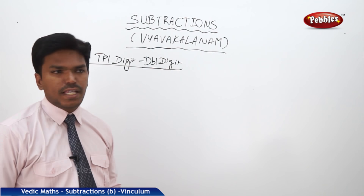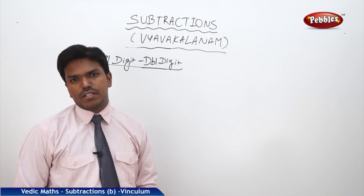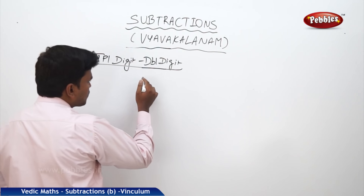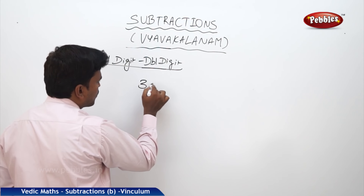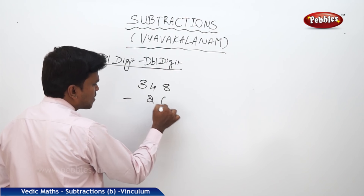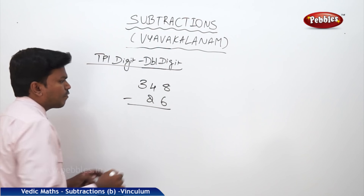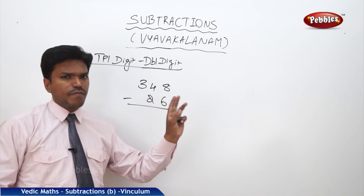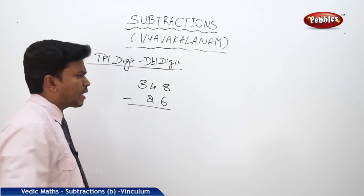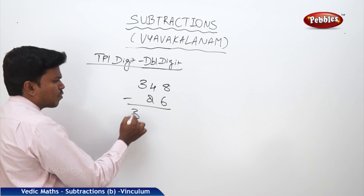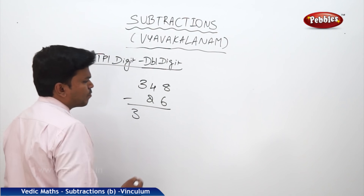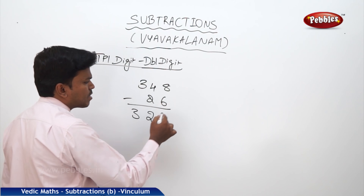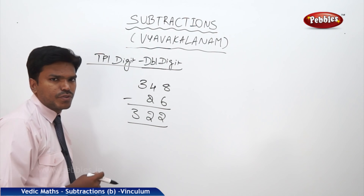Now triple digit minus double digit. Example: 348 minus 26. Start left to right: drop 3 as there is no digit below it. 4 minus 2 equals 2. 8 minus 6 equals 2. Answer: 322.